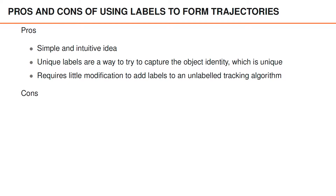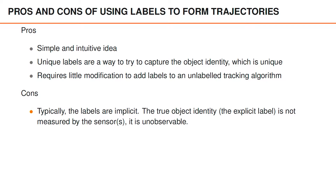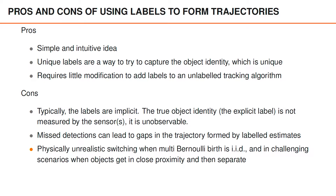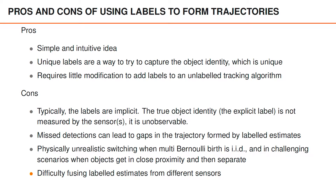However, there are also some negative aspects to using labels. One is that typically the labels are implicit. If there are consecutive misdetections, this can lead to so-called gaps in the trajectories formed by the labeled estimates. We might get physically unrealistic switching when the multi-Bernoulli birth is independent and identically distributed in challenging scenarios when objects get in close proximity and then separate. And lastly, it becomes difficult to fuse the labeled estimates from different sensors. We're going to explain all these four challenges in this video.